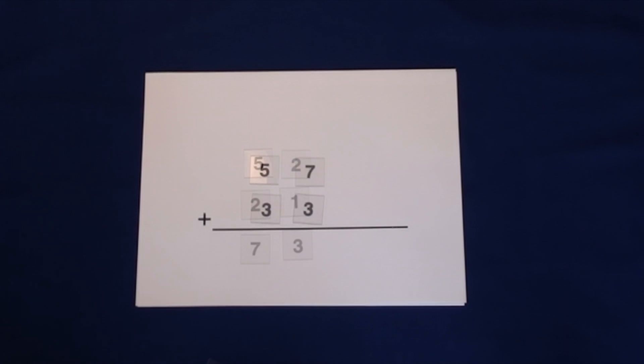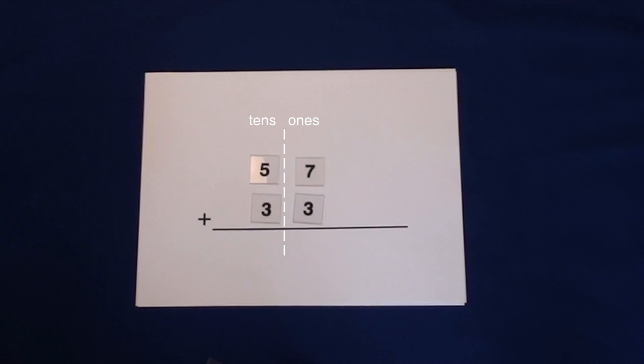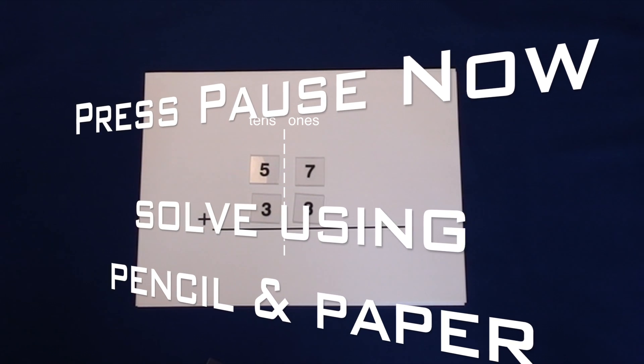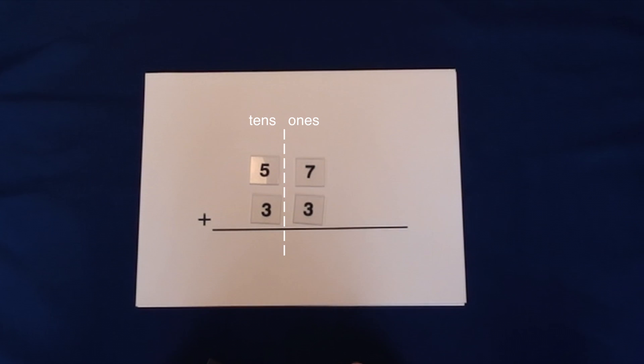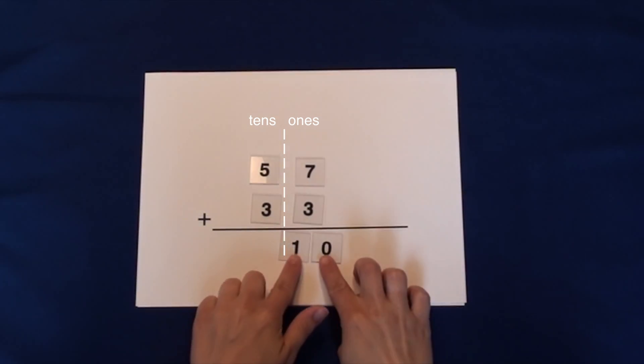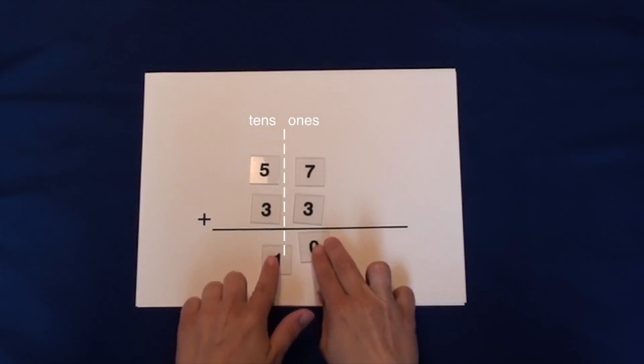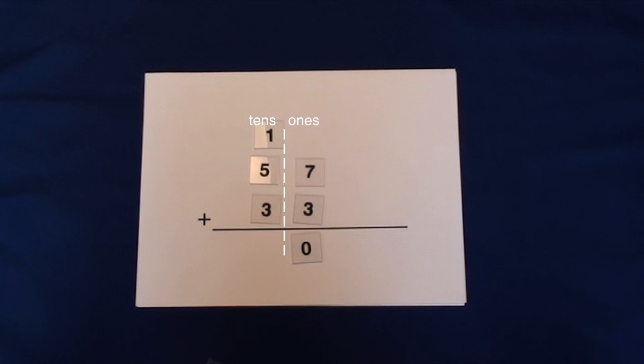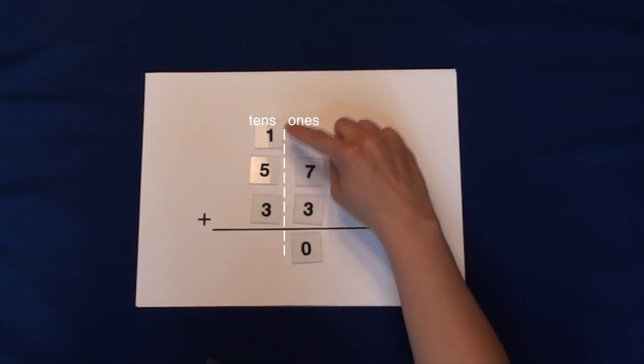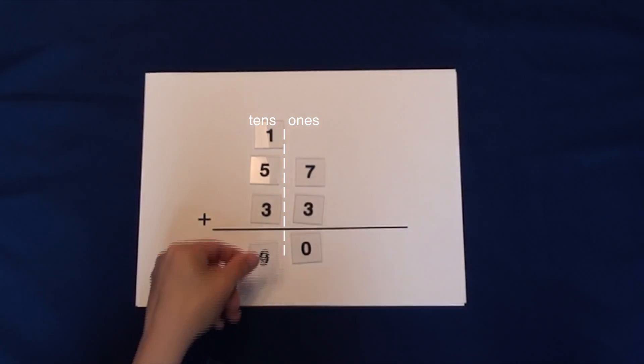Let's try another. 57 plus 33. 7 plus 3 equals 10. 10 ones equals 1 ten. We carry the 10 and place it on top of the 10's column. There are no ones remaining. 1 plus 5 equals 6. Plus 3 more equals 9. Our sum is 90.